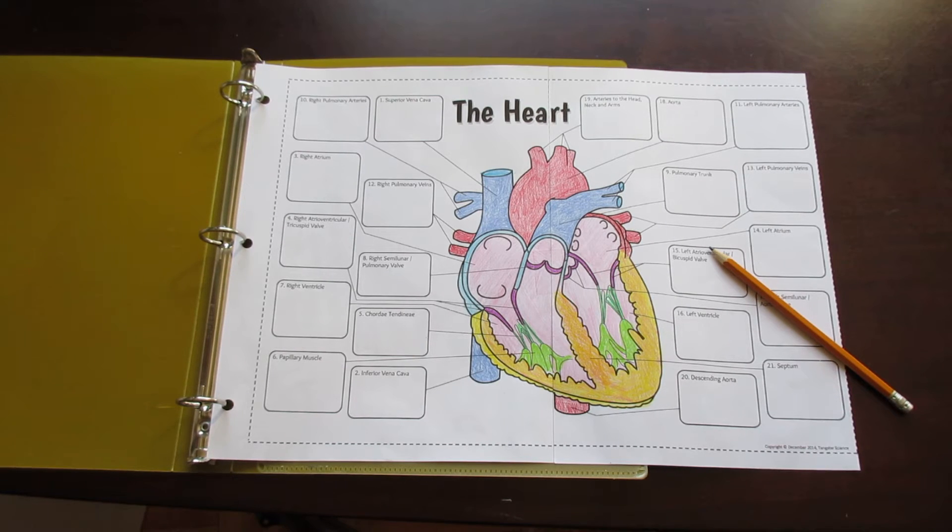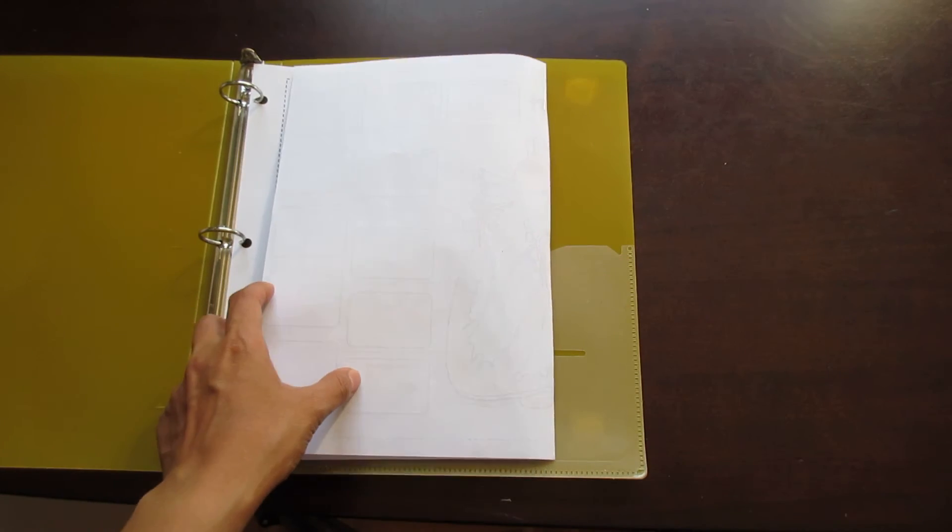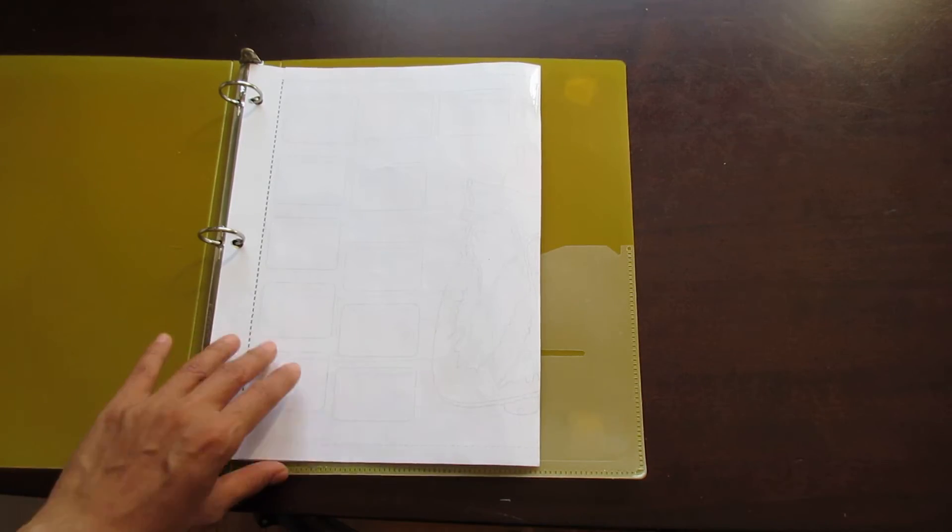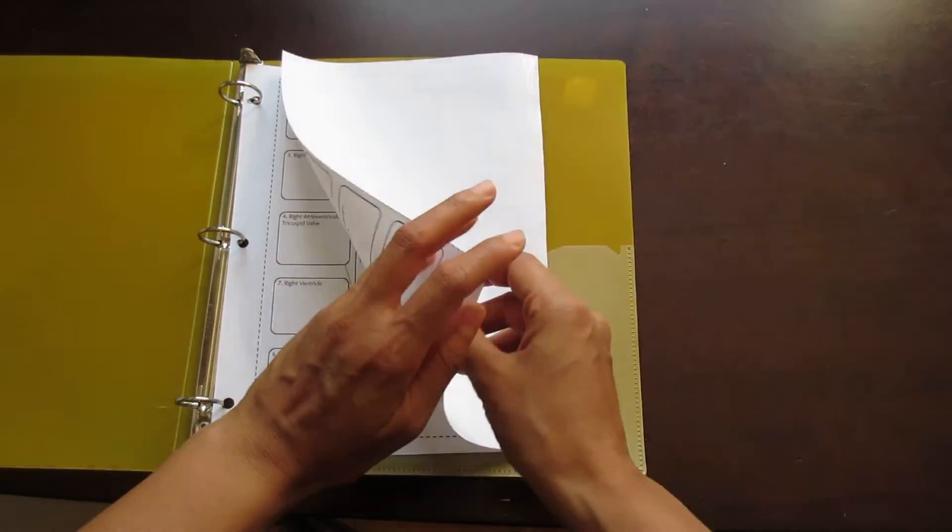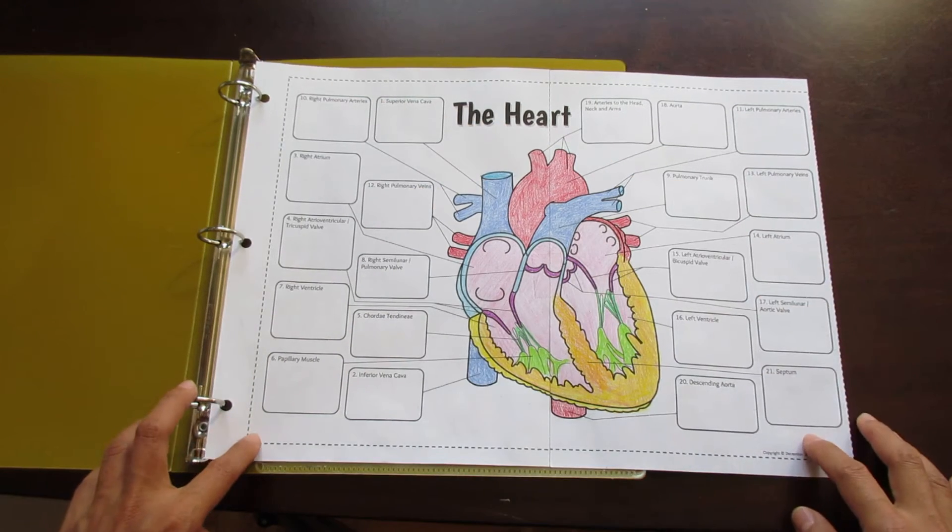This is the Tang Star Signs Big Heart foldable. It's made up of two pieces of paper which, when cut along the seam and taped together, create a foldable that fits neatly into a binder without overlapping the binder rings. If you choose to use this for an interactive notebook, just cut along the dashed lines and the foldable will become smaller.